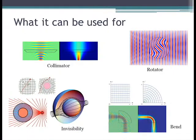So what can you do with transformation optics? One of the most famous examples is invisibility. The idea is that if you can bend light around an object such that the object does not affect the light, then it would be invisible.